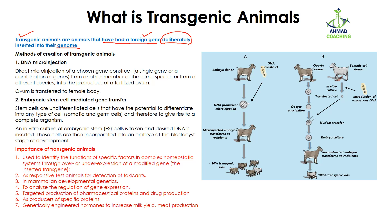There are different methods by which you can create transgenic animals. The first one is DNA micro injection. As the name indicates, they are going to be micro or small injections of DNA. It means that you are going to directly micro inject your chosen gene construct. Gene construct means that you may add a single gene or a combination of genes that you wanted to study.